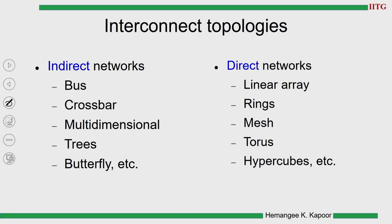Interconnect topology is broadly divided into two types: indirect and direct. In indirect networks we have bus, crossbar, multidimensional arrays including trees, butterfly, and more variants. In direct networks we have linear arrays, rings, mesh, torus, hypercubes, and several more. As part of this course on parallel architecture we just want to get a feel of how the network functions. We are going to see bus, crossbar, multidimensional arrays, and some of the direct networks.